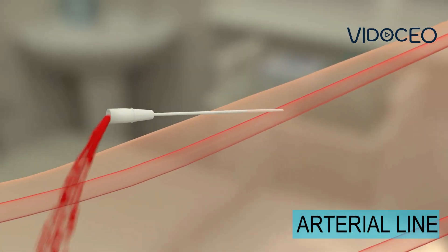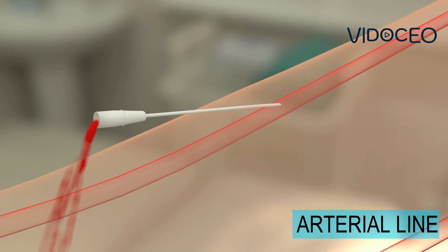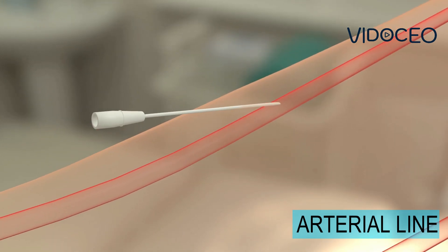Once inside the lumen of the artery, blood will come out of the catheter in a telltale pulsatile manner. This is how the doctor can tell it is not a vein.